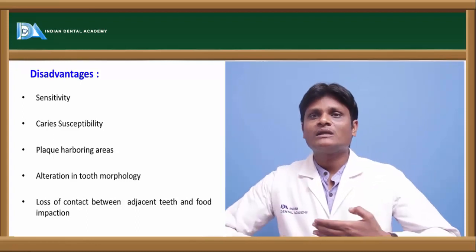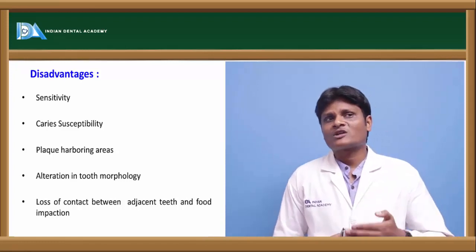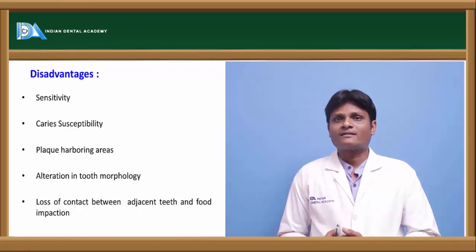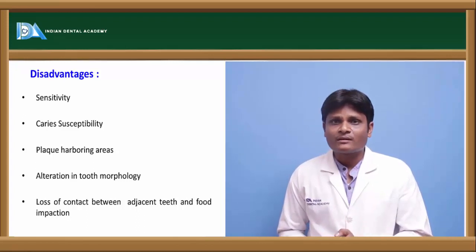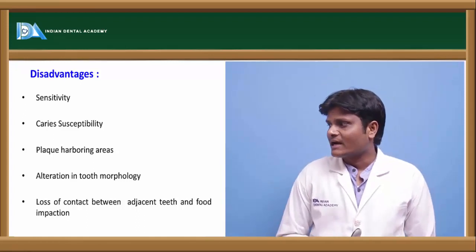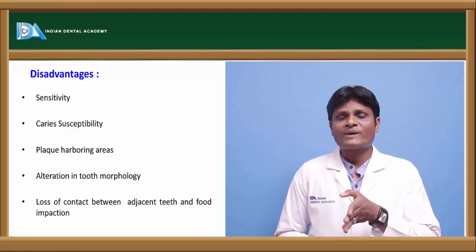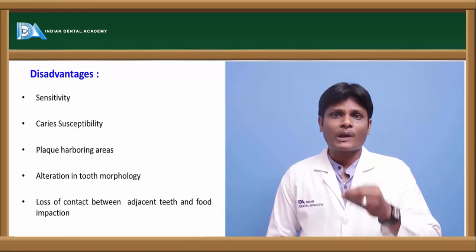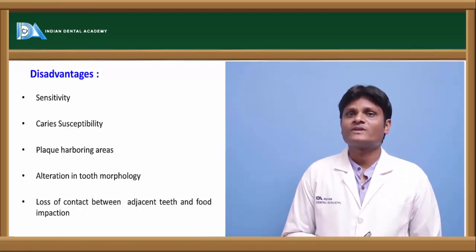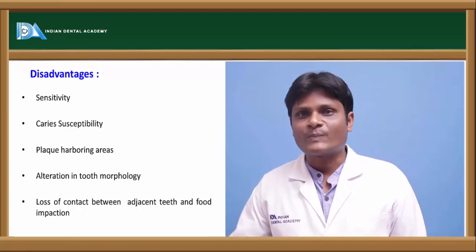Another disadvantage is alteration in tooth morphology. By means of proximal stripping, we are actually altering the morphology of the teeth, particularly upper anterior teeth. You should be very careful to maintain the morphology of the teeth under treatment. Also, over-stripping of the proximal surfaces will create a space between teeth, acting as a point of plaque accumulation and eventually leading to periodontal destruction, sensitivity, and carious lesions.